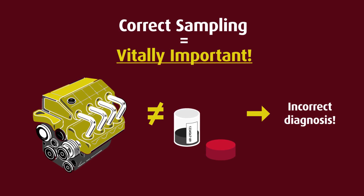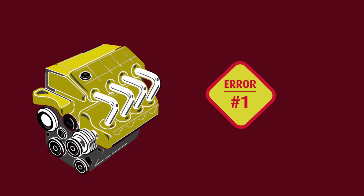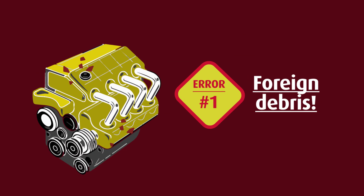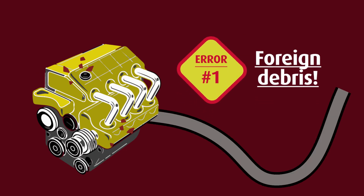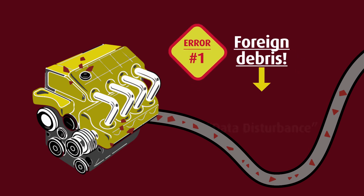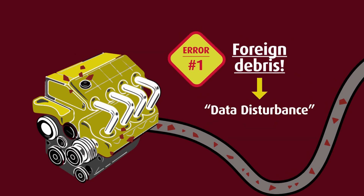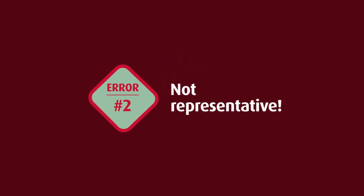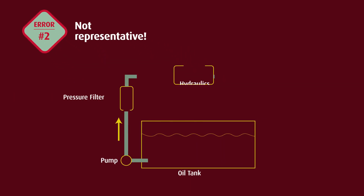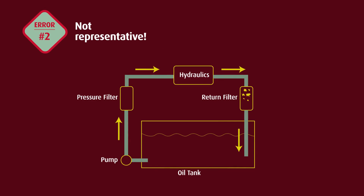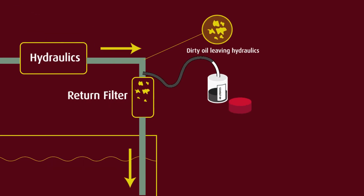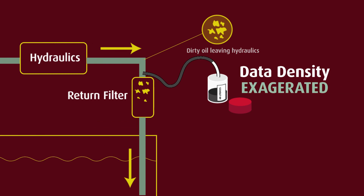There are two things that can go wrong with taking an oil sample. The first error, and the most common one, is that the sample is contaminated with foreign debris during its extraction — for example, getting dirt into the sample while extracting it. We call this error data disturbance. The second error is that the sample taken is not representative of what is going on inside the machine. A sample taken from a filter is a common example; the data density of the sample has been exaggerated by doing this.